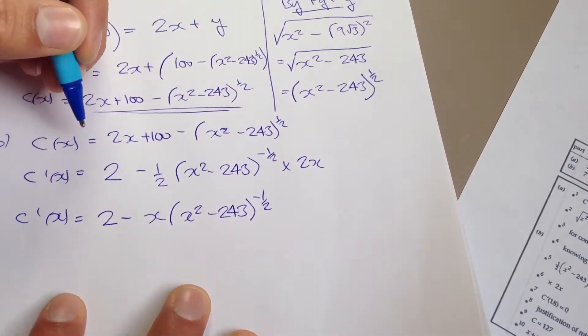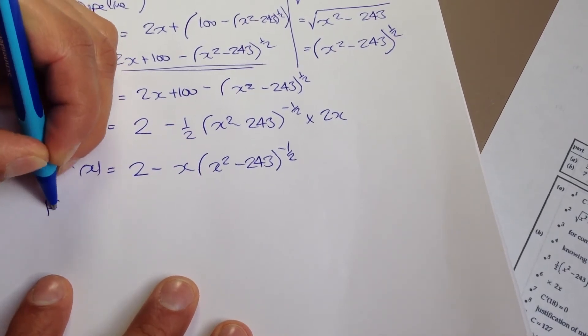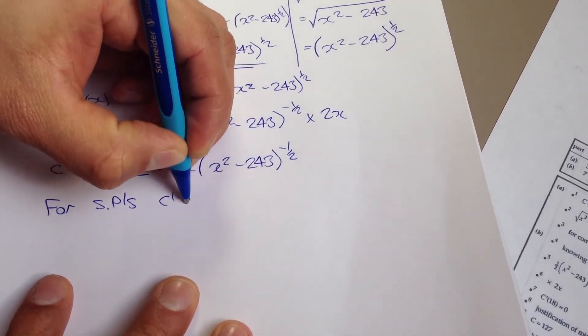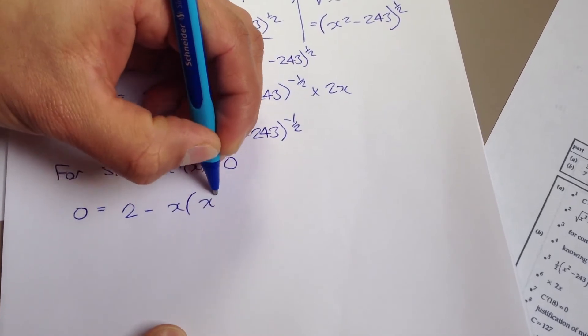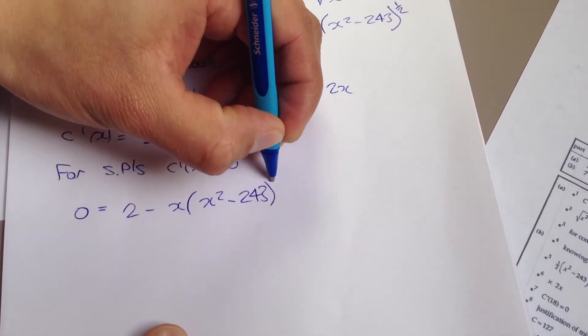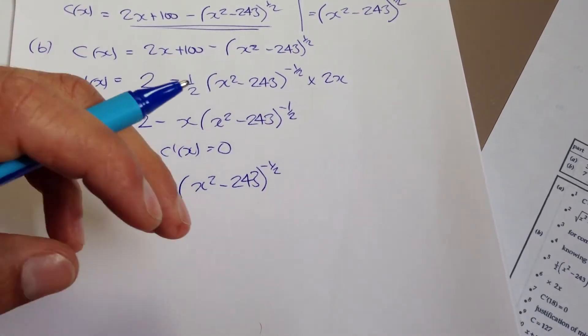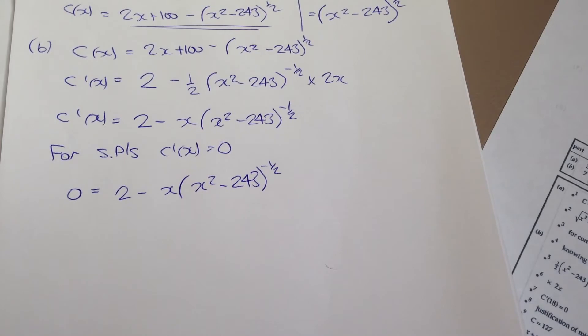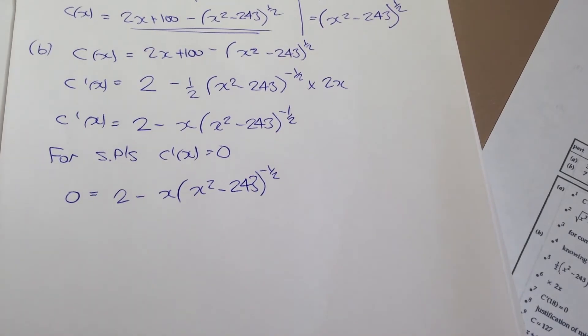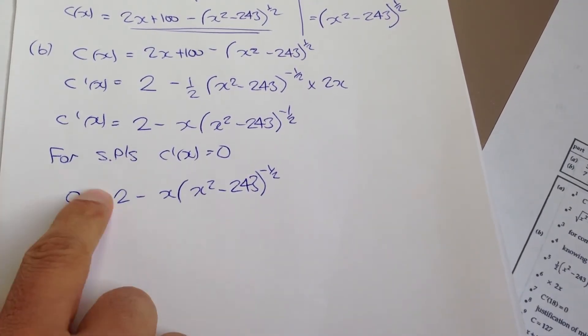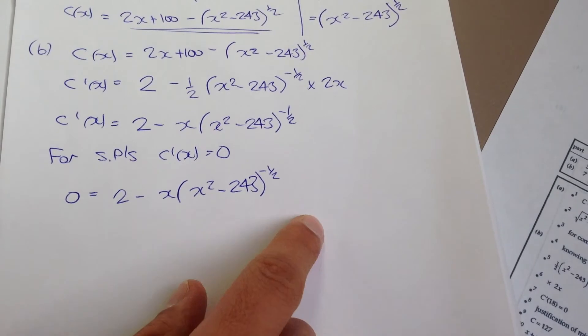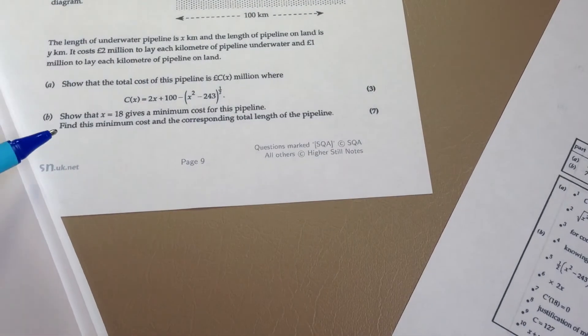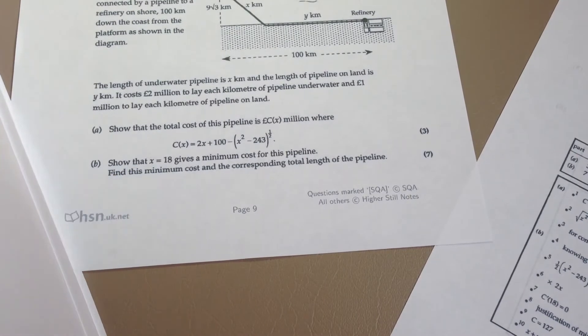And then once again we make a statement for stationary points. C'(x) equals 0, hence 0 equals 2 minus x bracket x squared minus 243 to the negative a half. So a lot of people might get to this point and think, what do I do here? I really don't know how to solve for x because this is a lot more complicated than I've ever seen. And all I say is, we know it should equal 0. And if it does equal 0 for whatever the x value is, then lo and behold it's a stationary point. Well, they've basically said to us, show that x equals 18 gives a minimum.